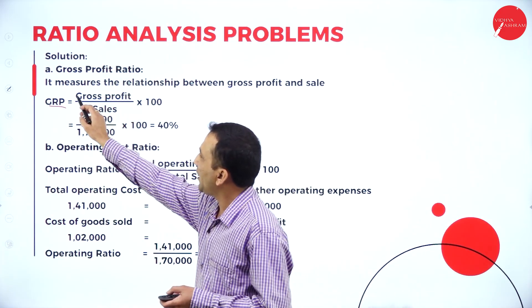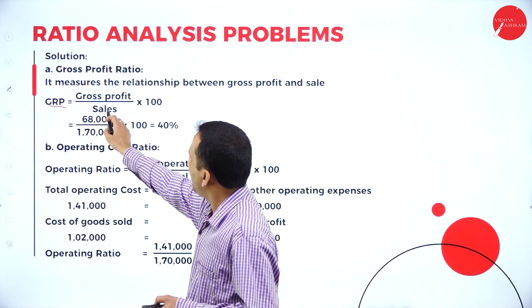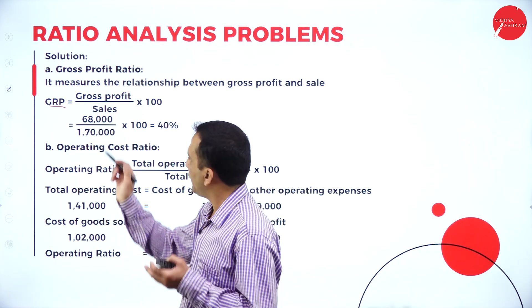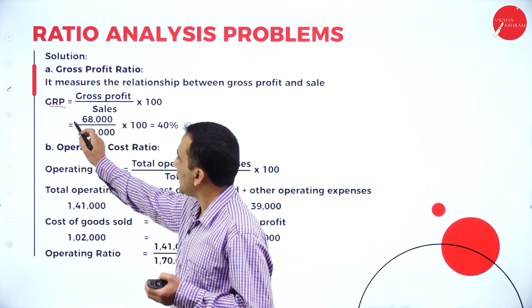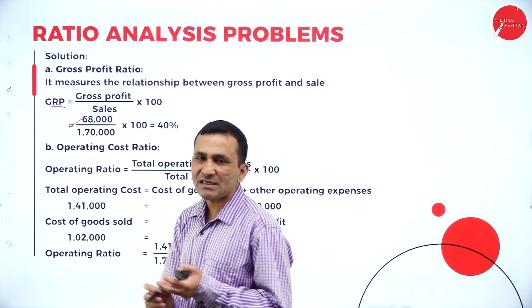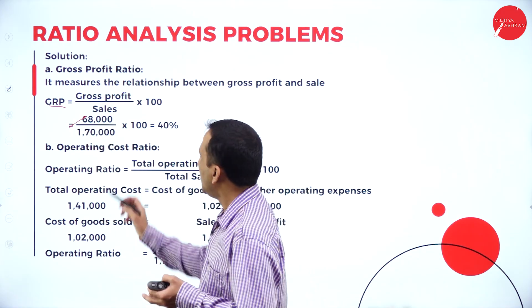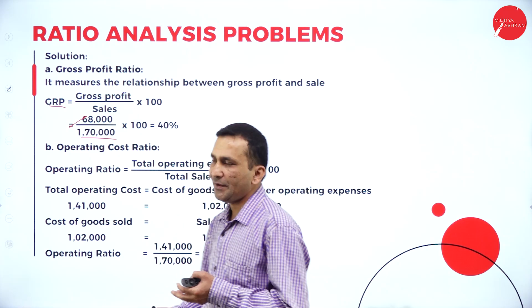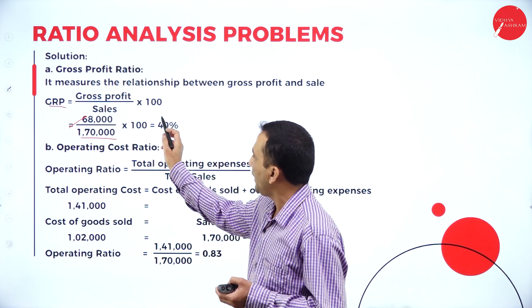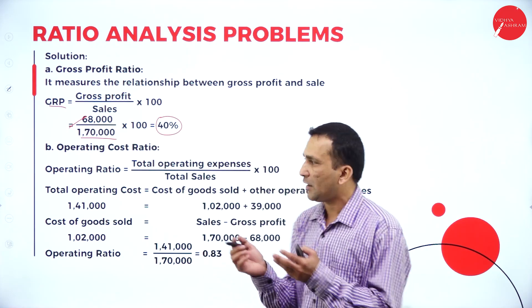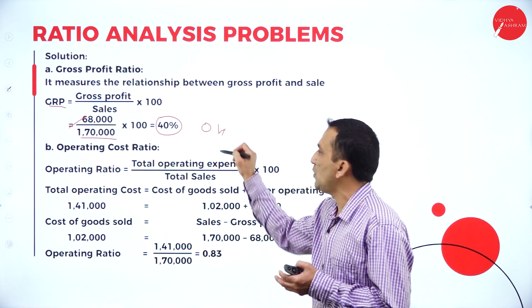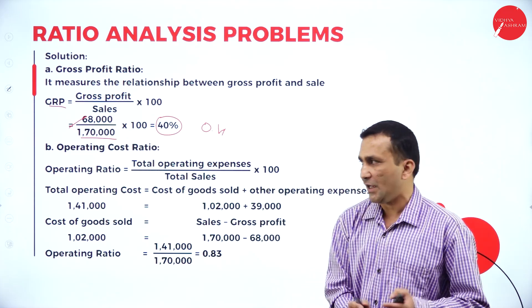The sales value is 1,70,000. Using this: numerator gross profit 68,000 divided by sales 1,70,000 into 100 — we are getting 40%.